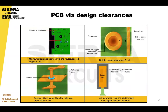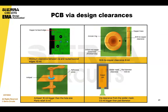In terms of PCB via design clearances, minimum clearance between via and routed or scored edges would be 10 mils in most cases, unless you have an advanced requirement. Drill-to-copper is 8 mils. If you have a lower layer count like a four-layer or six-layer board, most fabricators can do better than 8 mil drill-to-copper. But as your layer count goes up, keep to an 8 mil drill-to-copper. There's also a discussion on anti-pad and the via clearance from solder mask as well.